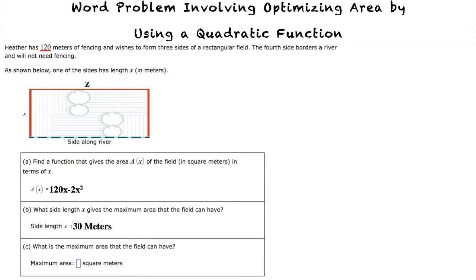For the third and final part of the problem, we need to find the maximum area that the field can have. In order to do so, we will plug in 30, which is the side length of x that gives us the maximum area, into the area equation.